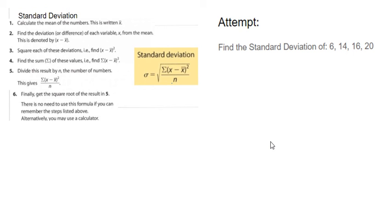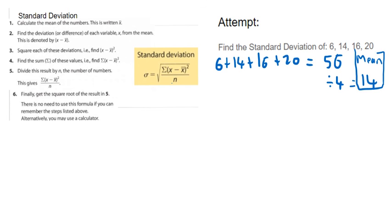So first step anyway is to work out the mean again. So 6 plus 14 plus 16 plus 20. So when I have to divide it by 4, so 56 divided by 4 is 14. So the mean here is 14.